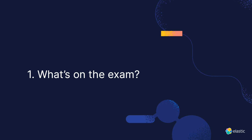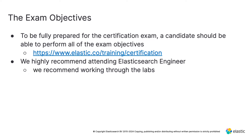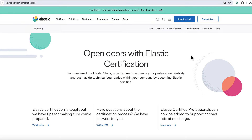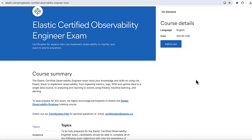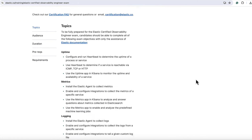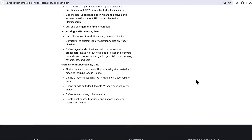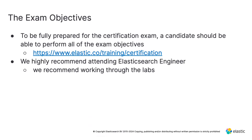So what's on the exam? This is a critical part of preparing. If you want to be fully prepared for the Observability Engineer exam, you should be able to perform all of the exam objectives. These objectives are on the training certification website at elastic.co/training/certification. If you click Get Certified for the Observability Engineer exam, it takes you to a page where you can buy the exam. Scrolling down, you will see every action you need to know. We also have a course called Elastic Observability Engineer that exactly matches the exam content and covers these topics, with options for virtual class sessions and on-demand training.